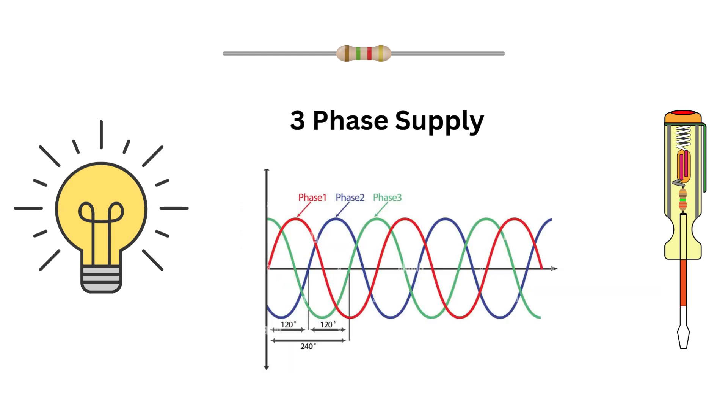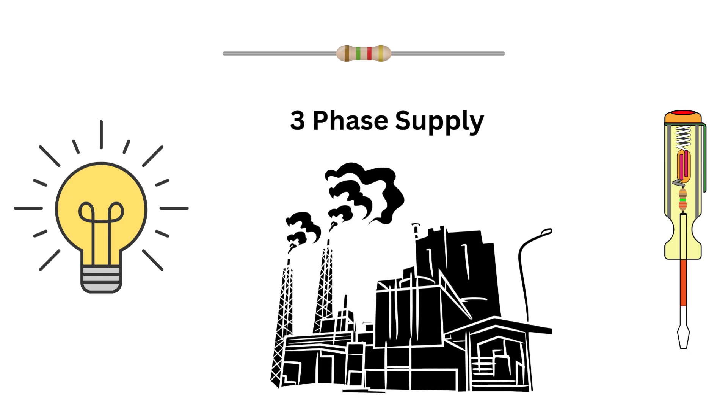Here's where it gets exciting, the three phase supply. A three phase system consists of three alternating voltages, each 120 degrees out of phase with the others. This setup ensures continuous power delivery and is highly efficient for industrial loads. Three phase supply is the backbone of industries and large equipment. It's like having three power sources working together in harmony.